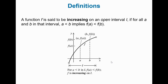A function is said to be increasing on open intervals if for all a and b, if a is smaller than b, then f of a — the y value — is smaller than f of b. This is increasing from left to right, going up. There's your f of a and f of b; f of b is bigger than f of a. If f of b is 8, f of a would be something like 6 or 5. Increasing from left to right, the graph is going uphill, so to speak.